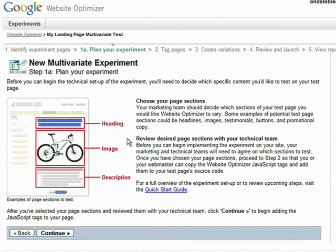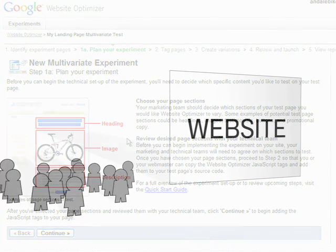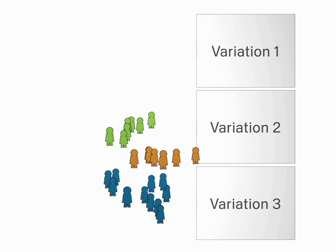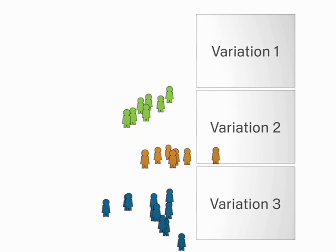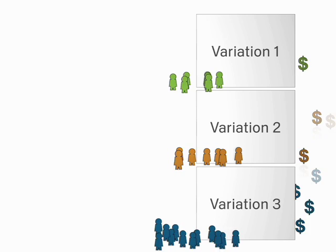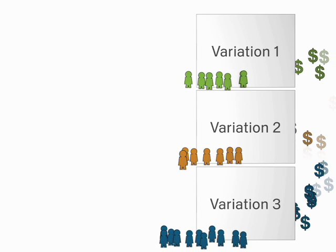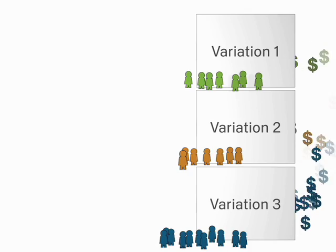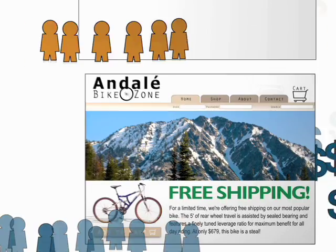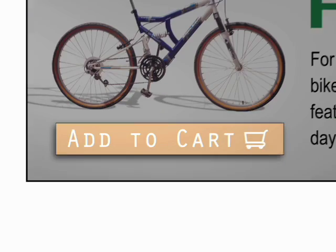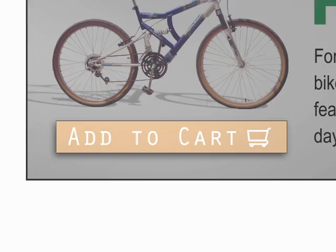Website Optimizer does the rest. As traffic arrives at your site, Website Optimizer works in the background, dividing visitors into different groups and presenting each group with a unique page variation. As it tracks how each group interacts with your site, Website Optimizer figures out which pages, and even which elements on a page, are most effective at producing the outcome you're looking for.